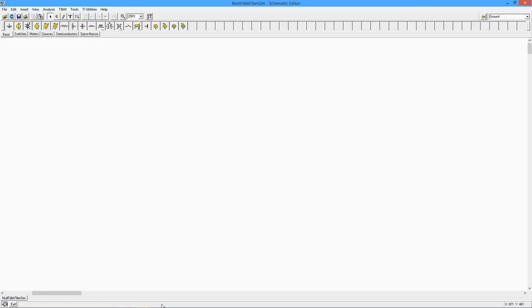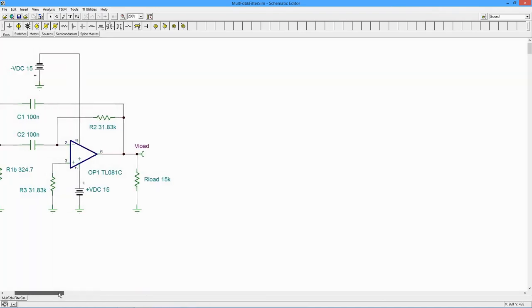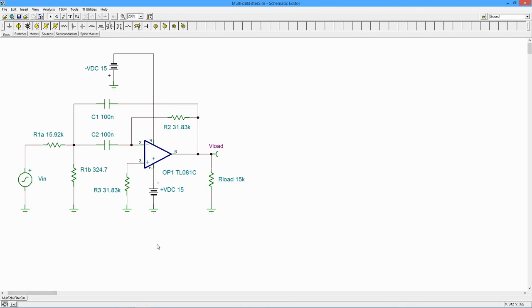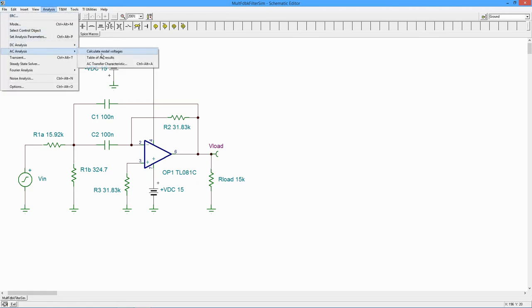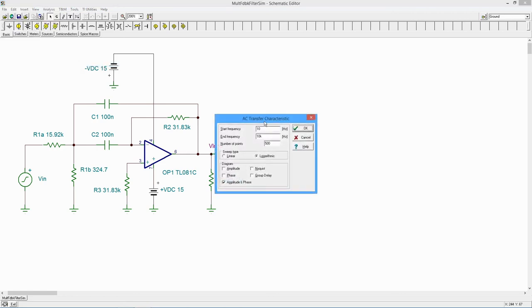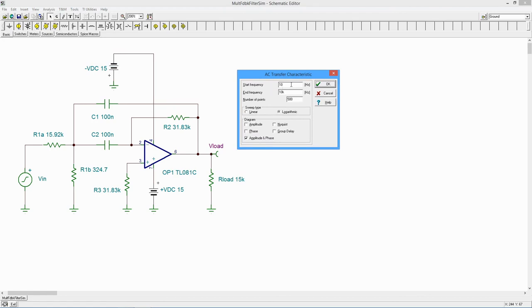Now we're here on TINA TI, ready to do a simulation. So, I've recreated our circuit design here. Multiple feedback filter. I've got a nice bifed op-amp, TL081, similar to an LF351. 15-volt power supplies. I've thrown a 15K load out here. Not a critical value. Let's see what we get. So, we should have this nice peaking response, a fairly narrow pass band. So, we're going to run this from 10 hertz on the bottom end to 10 kilohertz on the top end. Logarithmic display. Let's see what we get.